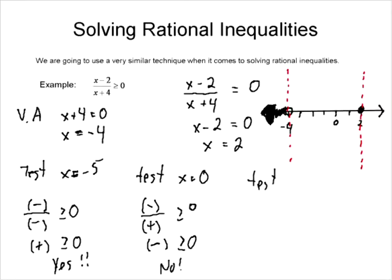Let's test x equals 3. If we put x equals 3 in the numerator, we get a positive value. If we put x equals 3 in the denominator, we get a positive value. Is a positive divided by a positive greater than or equal to zero? Of course it is. So we include all values in that region.